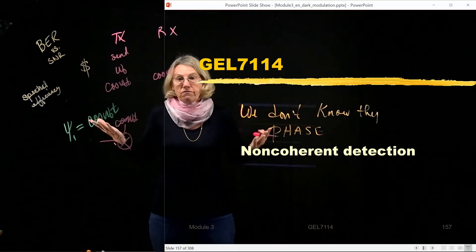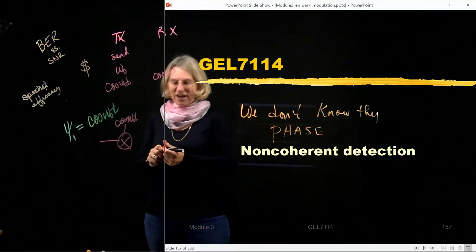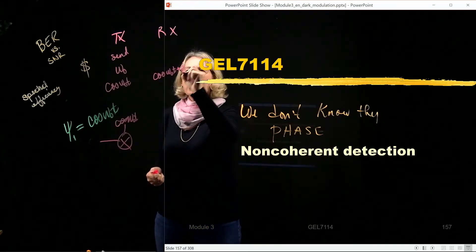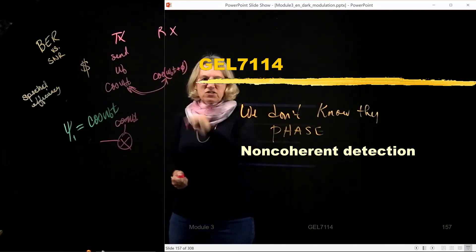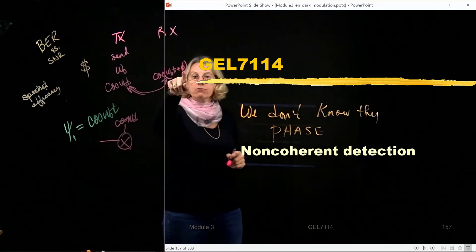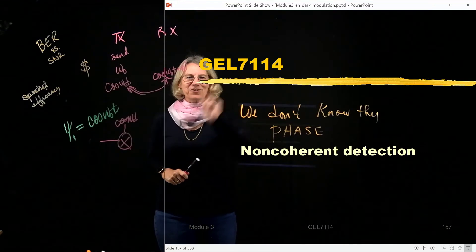So to save money, I don't know the phase. And so what happens when I don't know the phase? So again, normally this would have some phase offset. There's some phase offset between the two. And this phase offset in coherent detection, I assume that I track it and I force it to be zero. It costs me money. Non-coherent, I don't know that phase.